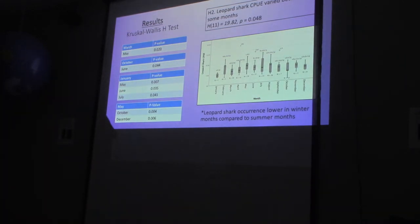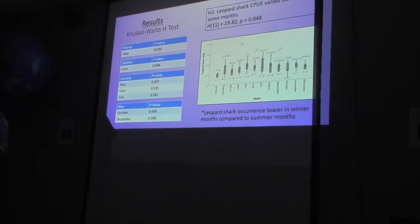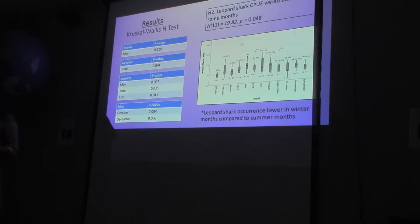I wanted to further analyze the data using just a summer catch per unit effort data set, because I wanted to look at when these sharks were most commonly found in the estuary. Summer months — April to August — also fall within the breeding and birthing season for these sharks, so that's when they're most abundant in the area.